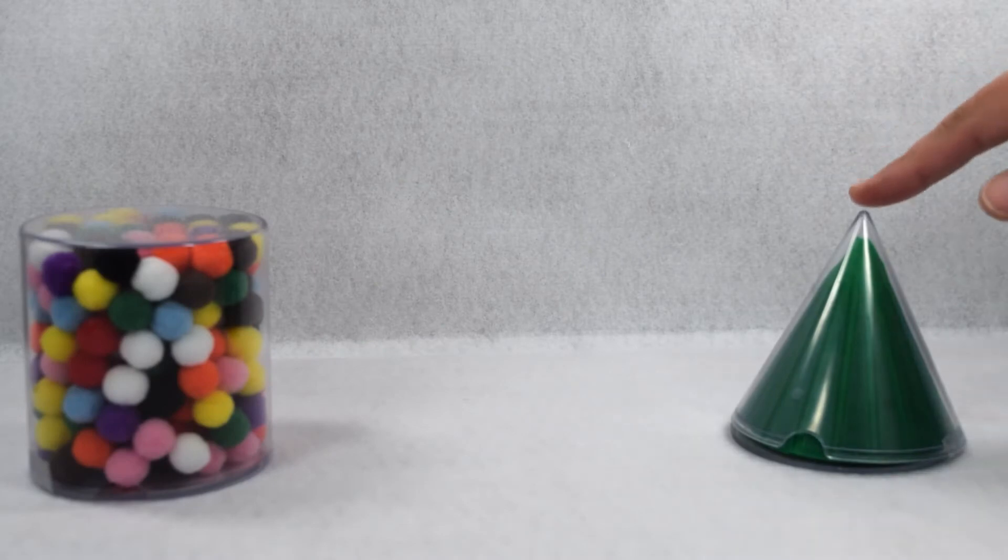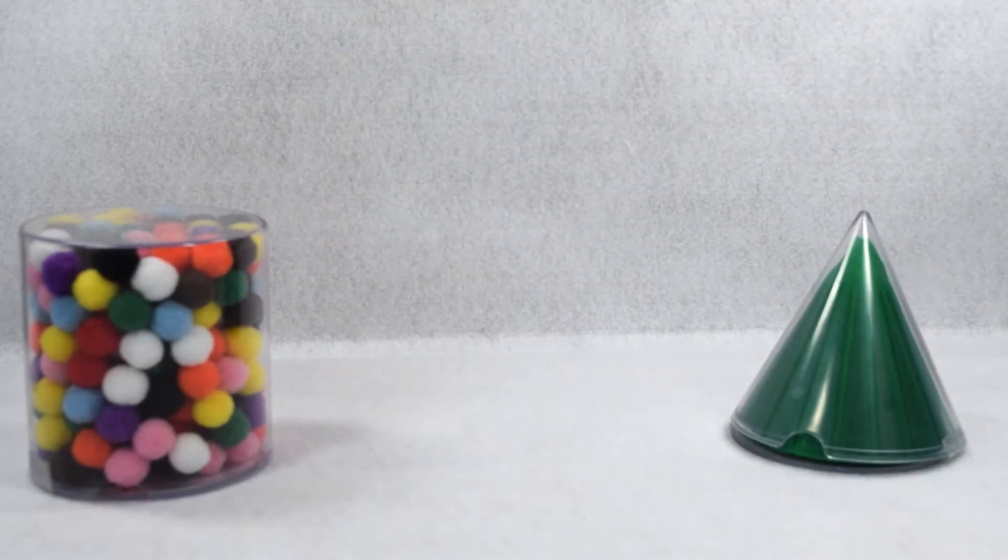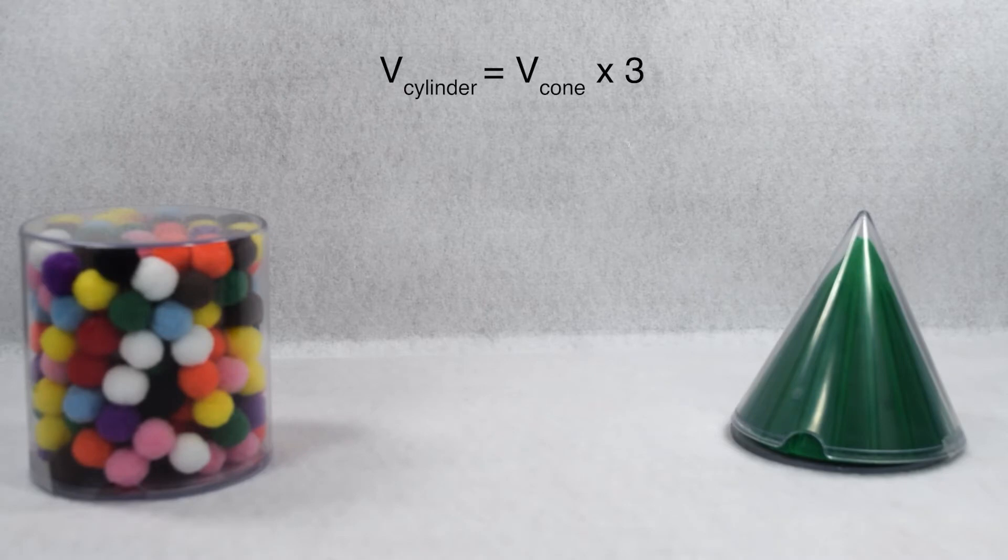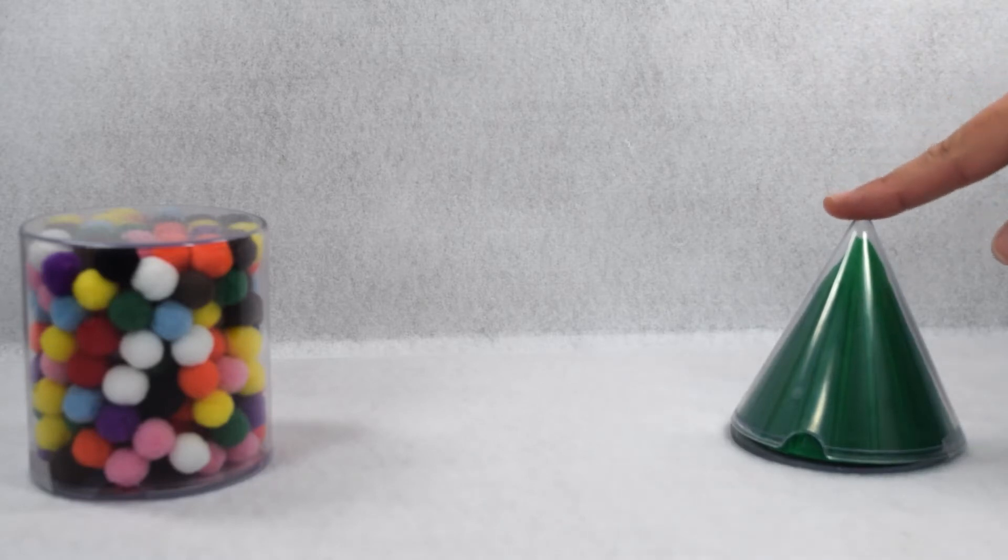We can see that the third pour from our cone pretty much fills the entire volume of our cylinder. Since it took us three pours from the cone to fill the cylinder, that tells us the volume of the cylinder is three times greater than the volume of the cone. However, we're looking for the volume of the cone, so let's take the reciprocal of that. The volume of the cone is going to be one-third the volume of the cylinder.